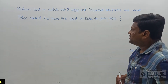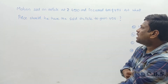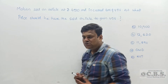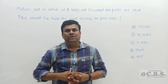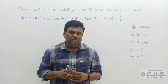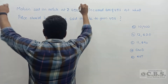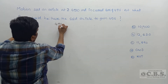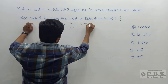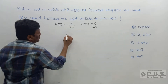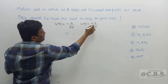Third question: Mohan sold an article for 4,510 rupees and incurred a loss of 45%. At what price should he have sold it to gain 45%? Cost price is the same, so we use the ratio concept. 45% means 9 by 20. Loss means minus 9 by 20, so selling price is 20 − 9 = 11 parts. Profit means plus 9 by 20, so new selling price is 20 + 9 = 29 parts.